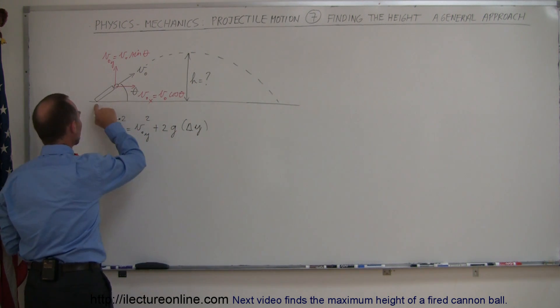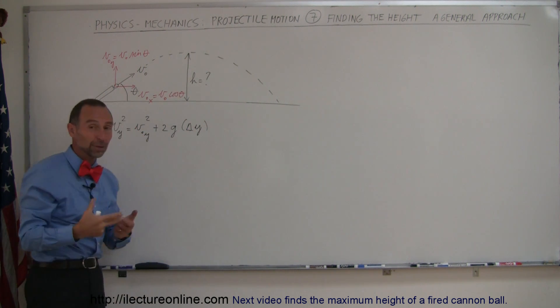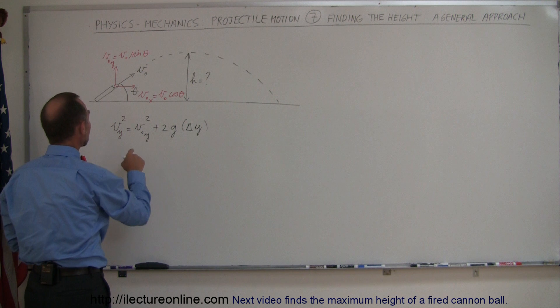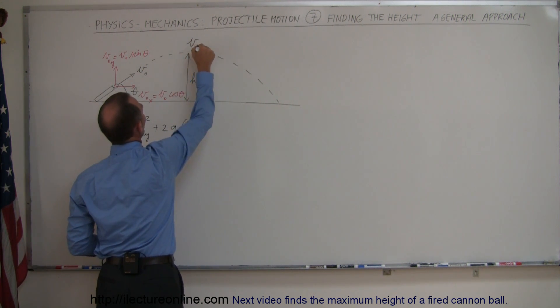And notice since we start from zero height and then we reach a maximum height, the change in y is simply going to be h, the height. The final velocity is going to be up here, so we'll call this v sub y final.